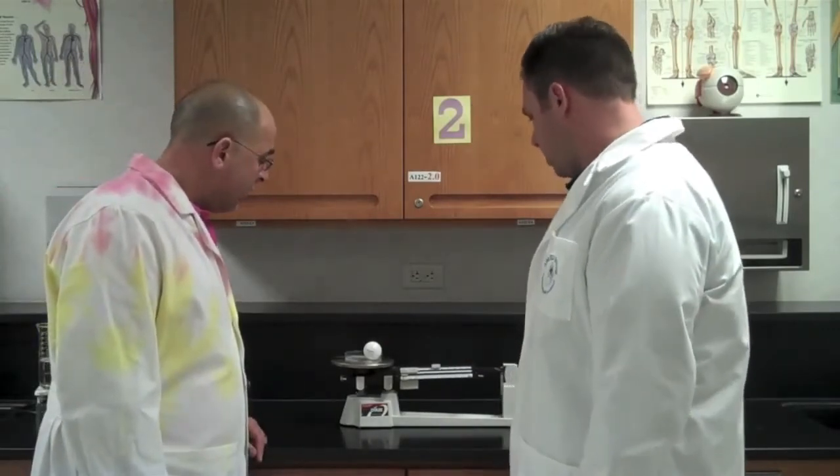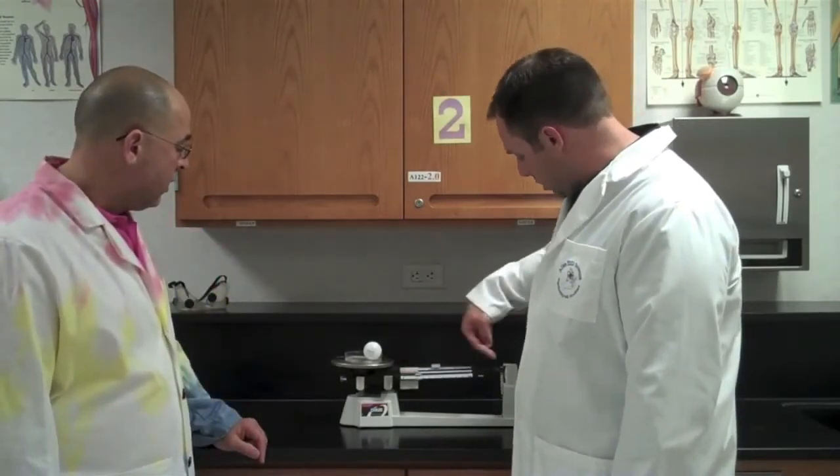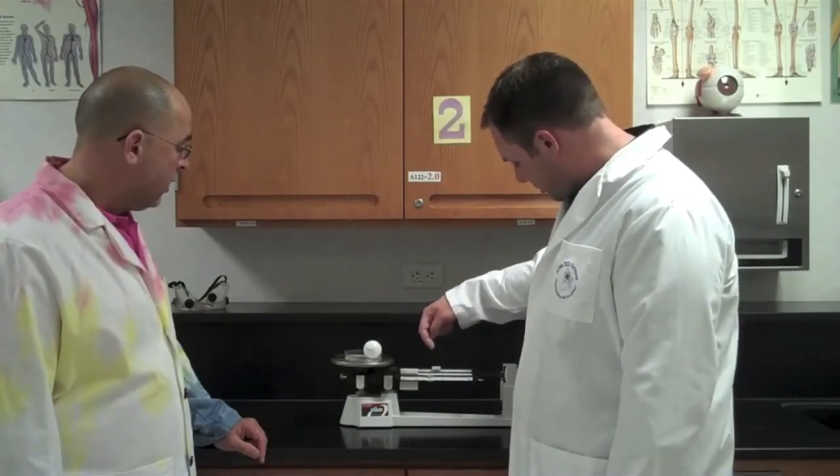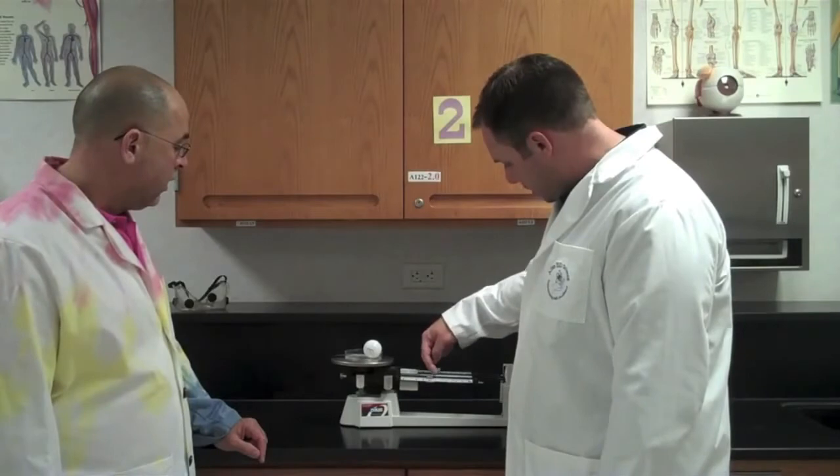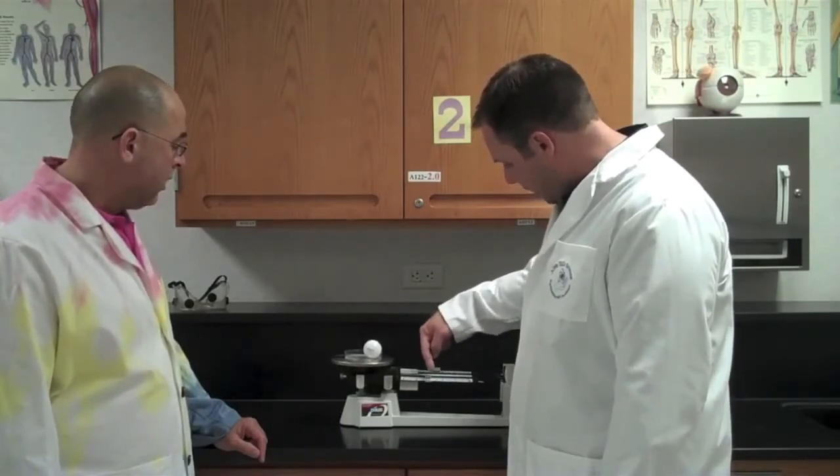So we're going to go back to 50, and then now what we're going to do is move the front rider until we get the pointer pointing directly at the zero point, which is pretty close. So we're going to say it's up here, it's 4. The back one is 50. If I simply take 50 and add it to 4, that is 54. 54, again, we measure mass in grams.